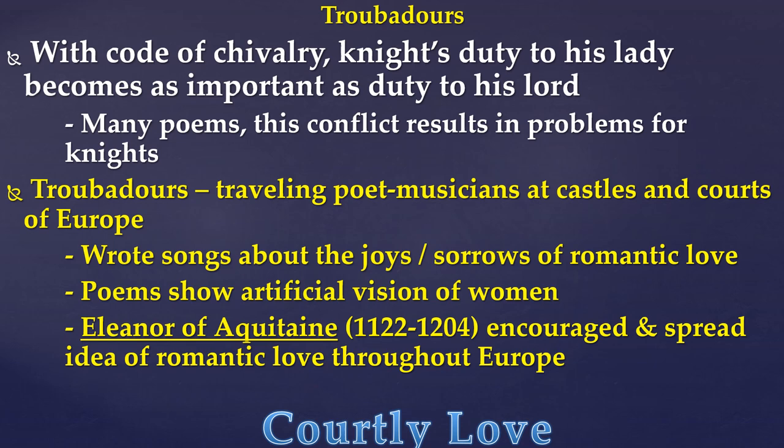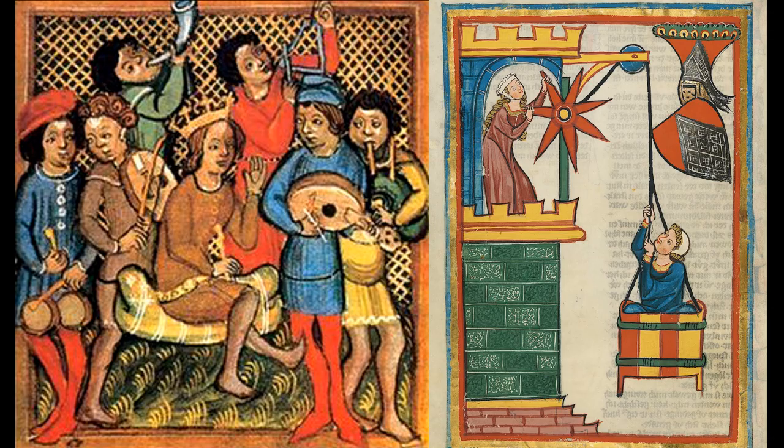Eleanor of Aquitaine is a name that will come up again and again throughout the Middle Ages unit. She's important particularly for this topic because she very much liked these stories, poems, and this brand of music, and she encouraged and spread this idea of romantic love throughout Europe. She was married to the king of France, later to the king of England, and she went on the Second Crusade. As she traveled, she brought these ideas with her court. In terms of courtly love and chivalry, Eleanor of Aquitaine — who is vastly important politically for many other reasons — very much spread the idea of chivalry through her travels and marriages throughout Europe.